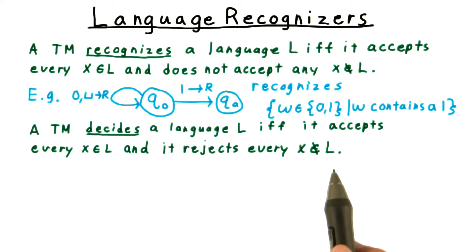Contrast this definition with what it takes for a Turing machine to decide a language. Then, it must not only accept every string in the language, but it has to reject every string not in the language. It can't loop like this Turing machine.